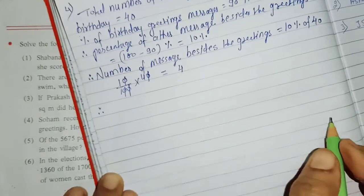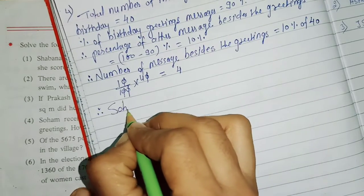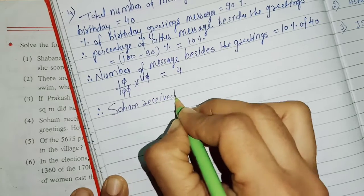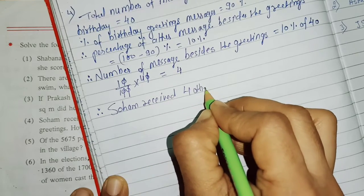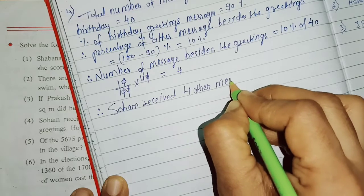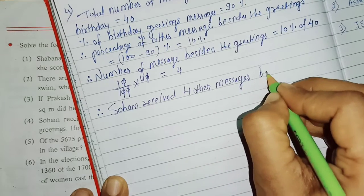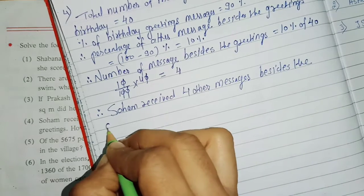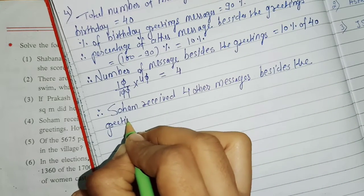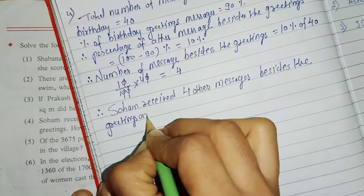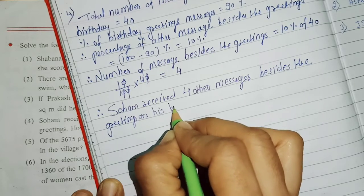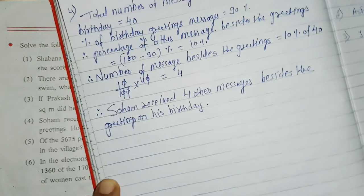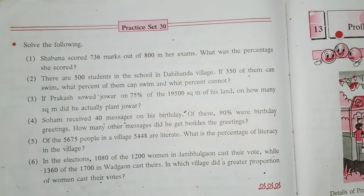Therefore, the answer statement is: Soham received 4 other messages besides the greetings on his birthday. This is our solution for question number 4. Let's read question number 5.